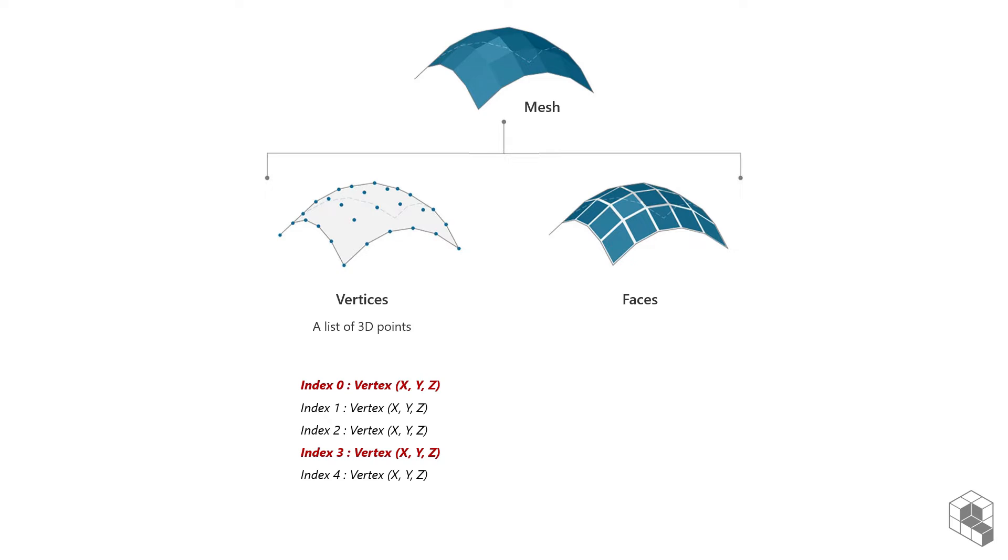Faces of a mesh is an ordered list of three or four vertices represented by a surface. Three vertices define triangles, and four vertices define quadrilaterals. In the face list, the vertices contain the vertices index, not the coordinates themselves.